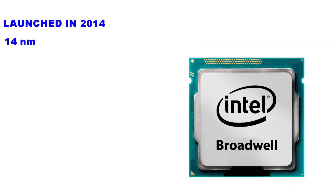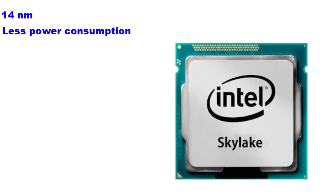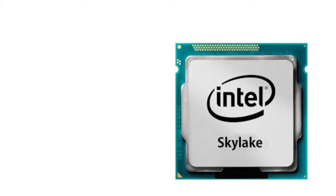Broadwell is the 5th generation architecture, launched in 2014 with a 14 nanometer processor. Skylake is the latest generation processor released by Intel, also using 14 nanometer processors like Broadwell, but with less power consumption.